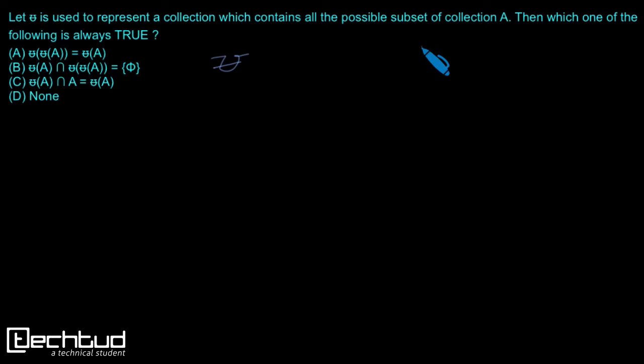So let's assume a set A equal to having, let's say, only 2 elements: 1 and 2. Now if this represents collection of all the possible subsets, what are the possible subsets of this A?